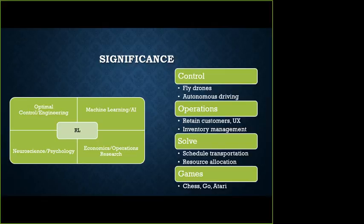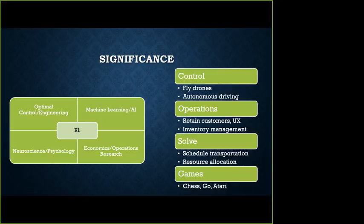RL goes by some other names in other areas, but the areas it actually touches range all the way from optimal control and engineering, AI and machine learning, neuroscience and psychology, economics and operations research. Many of these areas have interesting applications — for example, control applications like flying drones and autonomous driving are driven by innovations in RL and online learning. Similarly in operations research, inventory management and transportation research, resource allocation problems, and recent advances by DeepMind in playing games using reinforcement learning.